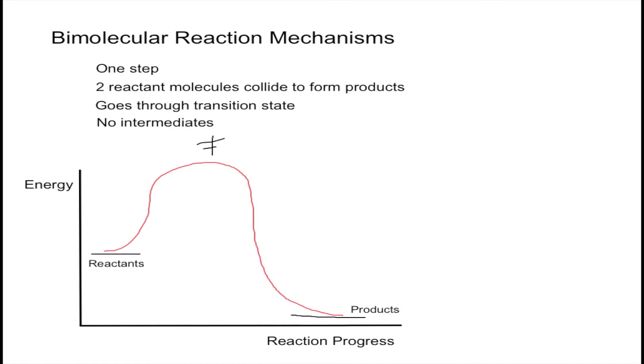So whenever you're thinking of a bimolecular reaction mechanism, always remember that there are two reactant molecules colliding to form the product. And that this only occurs in one step, forming that transition state.